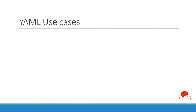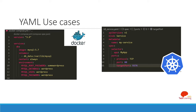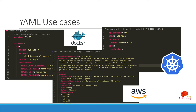Let's talk about the use cases of YAML. The most popular use cases are in DevOps. First, Docker Compose — you write the Docker Compose file using YAML, with specific keywords like version, services, volumes, and networks. Second, Kubernetes — you define various Kubernetes resources using YAML, with specific specifications for each component. Third, AWS CloudFormation — you use YAML to define your infrastructure as code and deploy resources on AWS cloud.